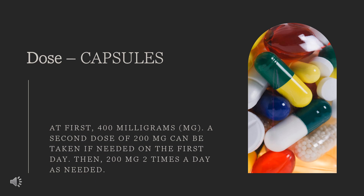For ankylosing spondylitis or osteoarthritis: Adults, 200mg once a day or 100mg twice a day. Your doctor may increase your dose if needed. Children: use and dose must be determined by your doctor. For rheumatoid arthritis or juvenile rheumatoid arthritis: Adults, 100–200mg twice a day. Children 2 years of age and older weighing more than 25kg: dose is based on body weight and is usually 100mg twice a day.